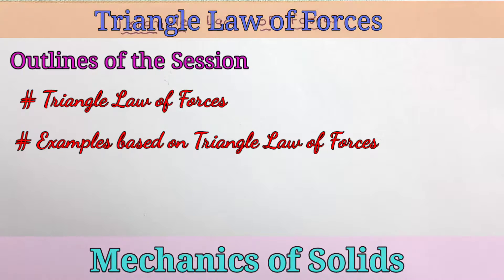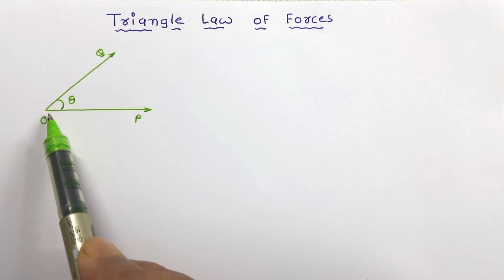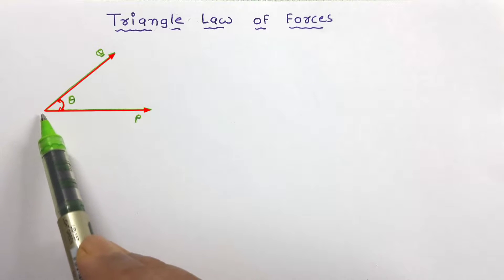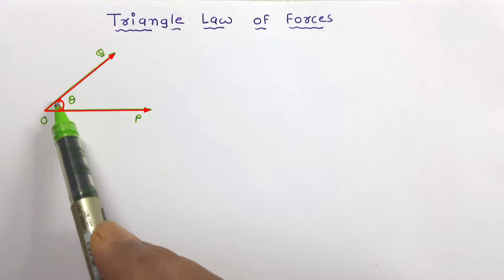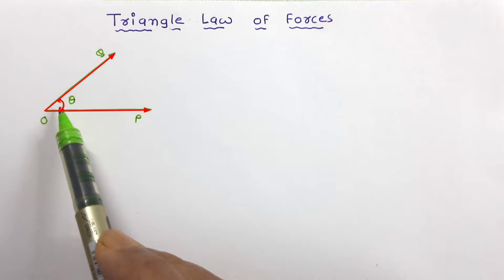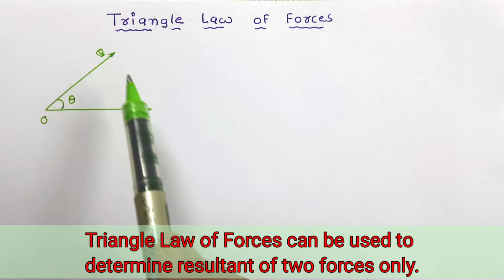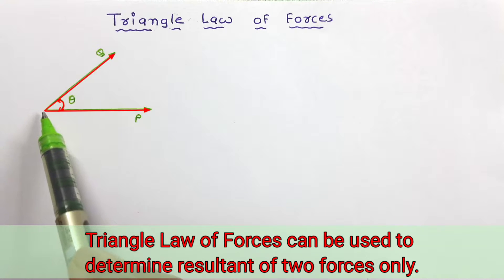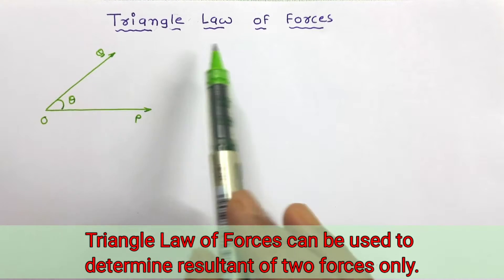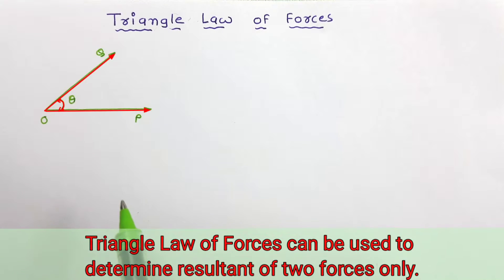Let us try to understand triangle law of forces. In this figure, we have two different forces P and Q acting on particle O. The angle between these two forces is theta. We can use triangle law of forces when two different forces are acting simultaneously on a particle. If the number of forces is more than two, then this rule cannot be used. It is applicable only when two different forces are given.